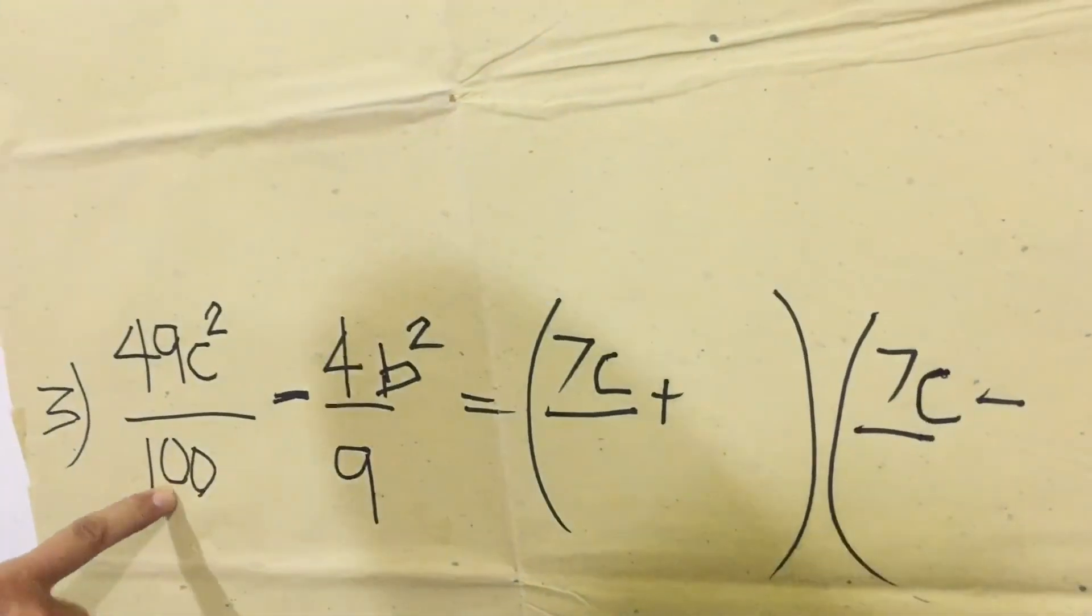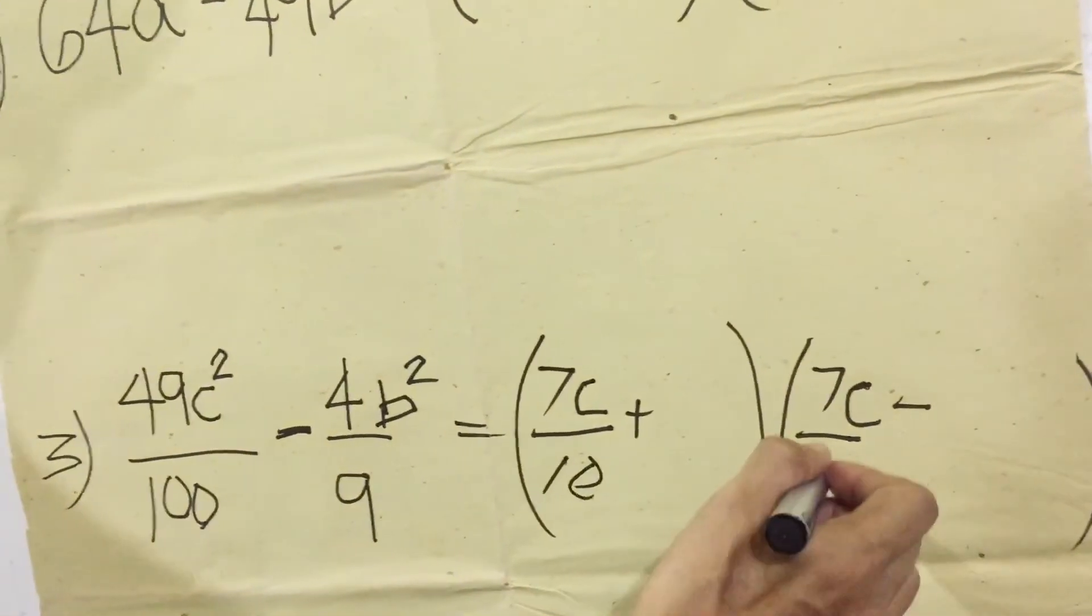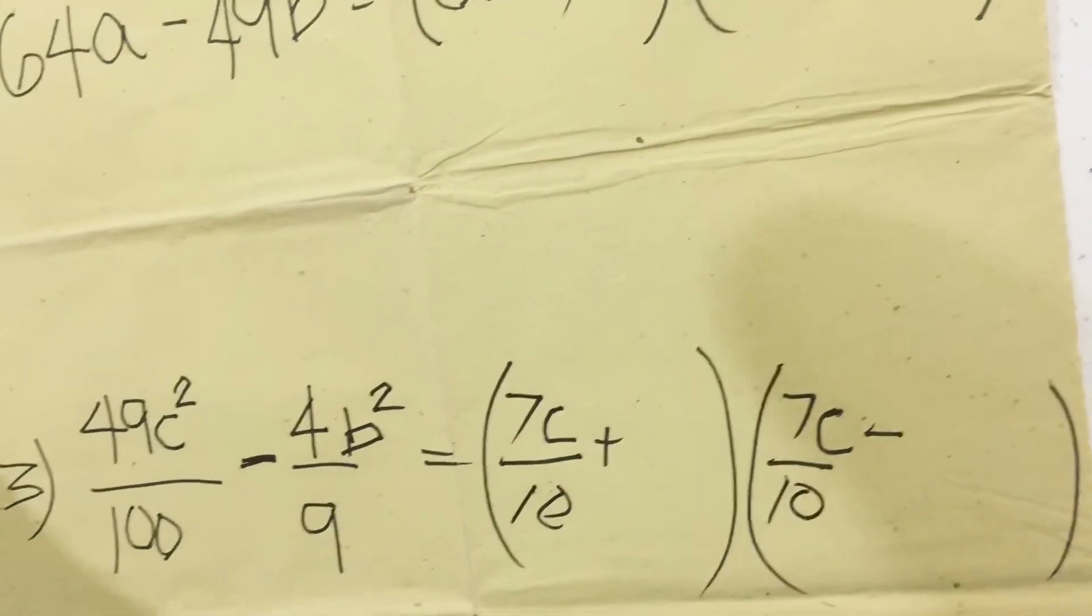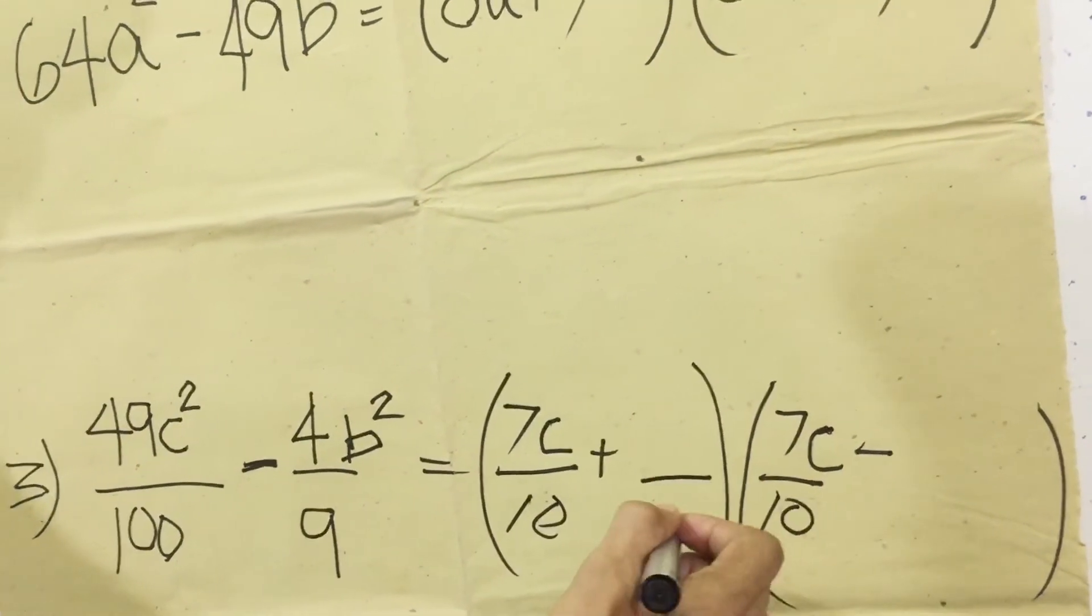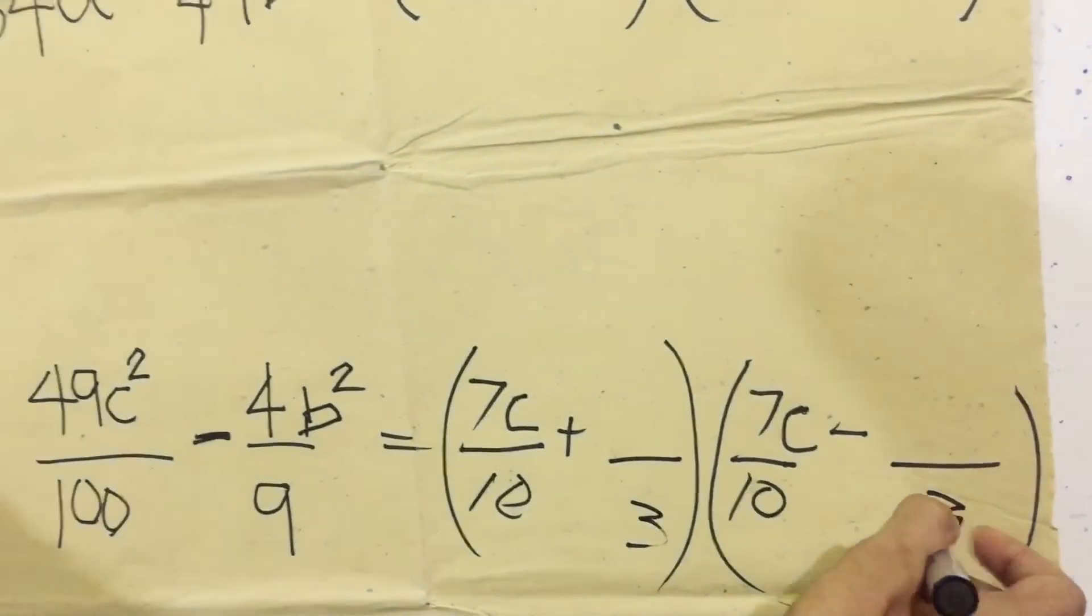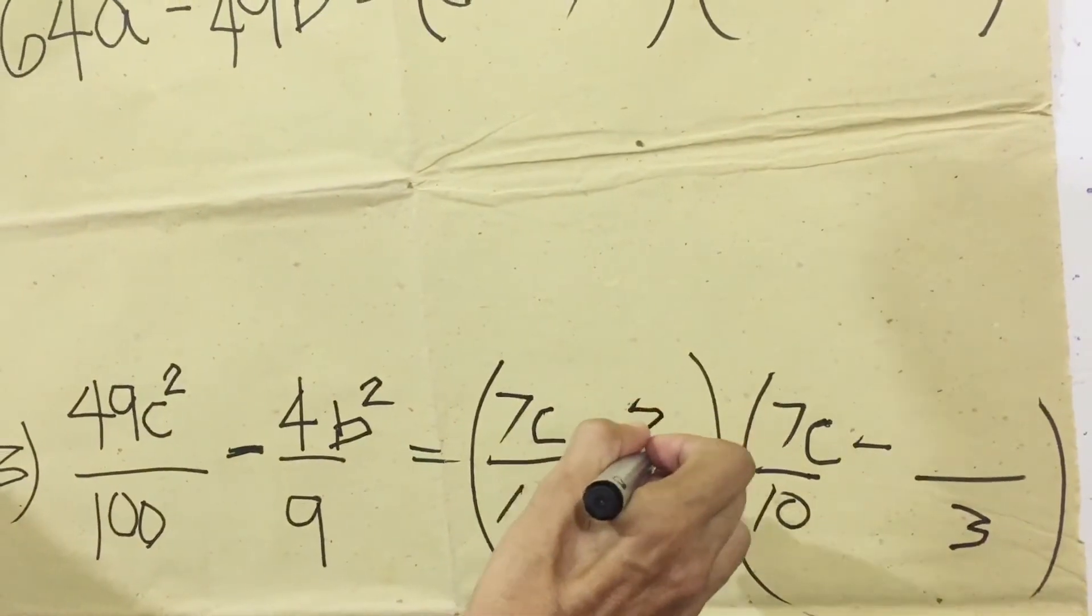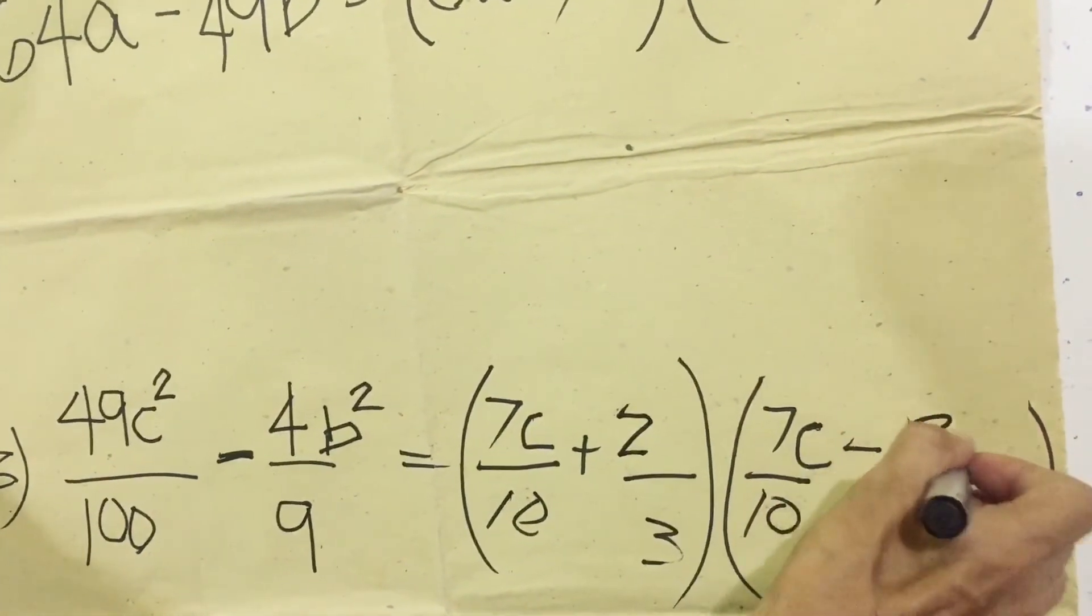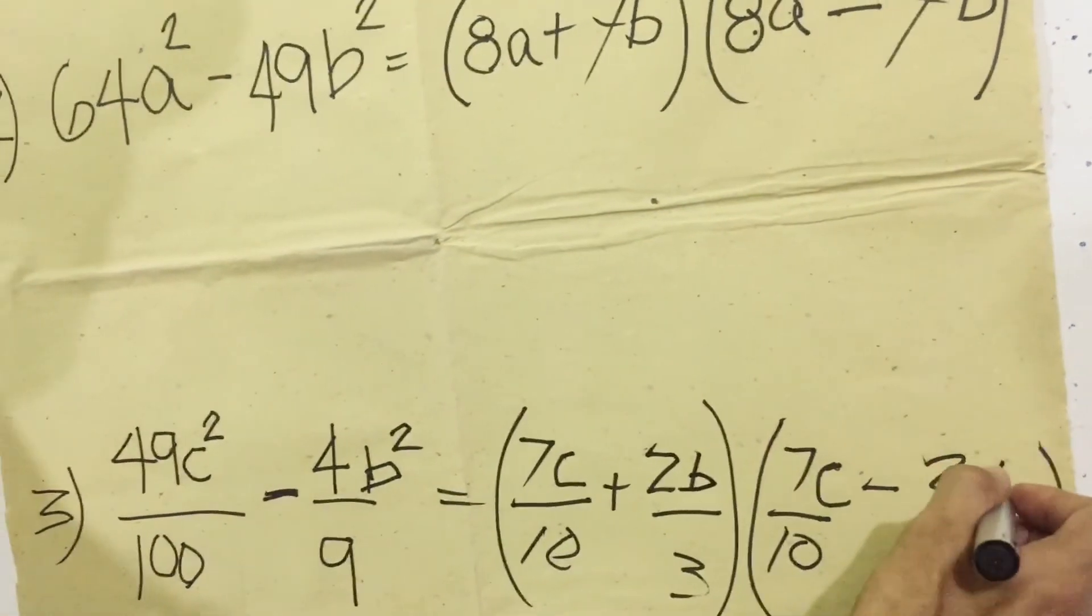And then the square root of 100 is 10. 10 times 10 is 100, so 10 here and then also here. And the square root of 9 is 3, so we have here 3, 3. And the square root of 4 is 2, so here 2, then 2 is also here. The square root of B-squared is B and also B.